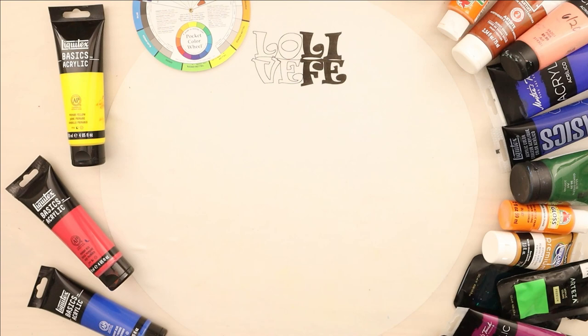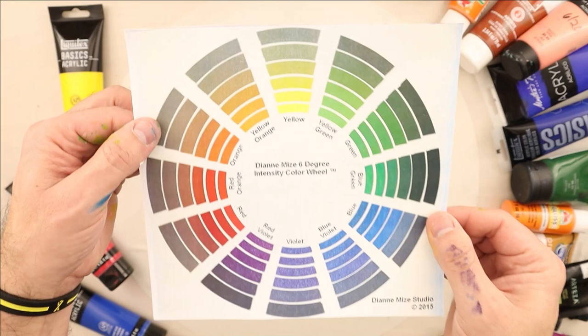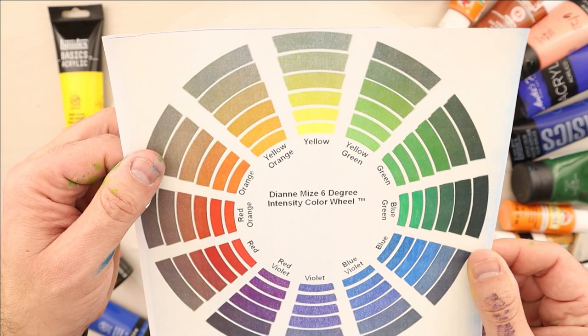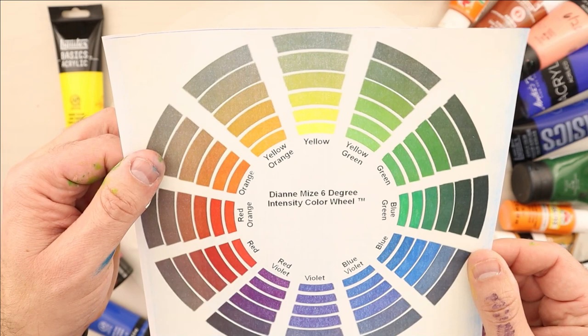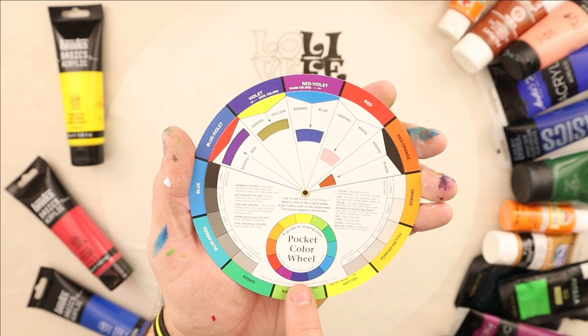First of all, if you don't have a color wheel, you need a color wheel. This was five dollars at Michael's. You can print them online. I've done that too. This was a free one that I got from Diane Mize at In The Studio Art Instruction. It's her YouTube channel, which I'll link in the description below. You need a color wheel so you can understand one important thing. Anytime you mix colors that are across from each other or complementary on the color wheel, you are going to get mud.